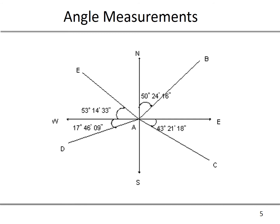For instance, line or angle NAB would be north 50 degrees 24 minutes 16 seconds east. So meaning we start at the reference angle north, we turn an angle of 50 degrees 24 minutes 16 seconds in the east direction.